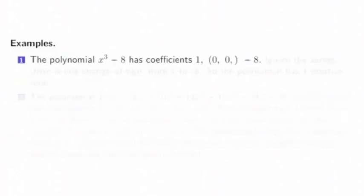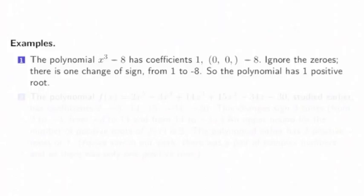For example, the polynomial x³ - 8 has coefficients 1, 0, 0, -8. Ignore the zeros. There's one change in sign from 1, positive 1, to -8. So this polynomial has one positive root.